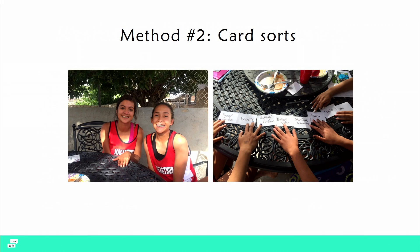The second thing we found really impactful, especially with young people, was card sorts. We know that young people sometimes can't formulate an answer right on the spot, so we asked them questions about where they would feel safest talking about sex and relationships and with whom, gave them pre-made cards, and asked them to sort and rank them. That was also really informative for learning about what they were thinking.